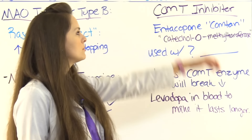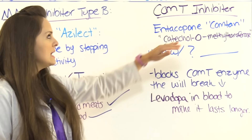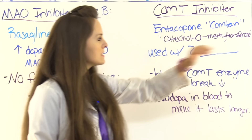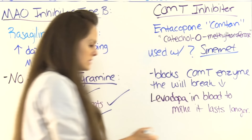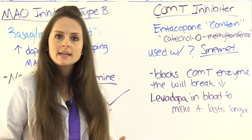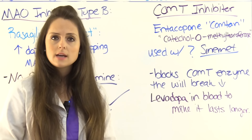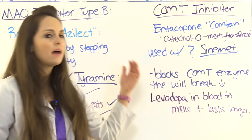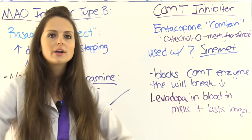Last but not least are COMT inhibitors — a popular one is entacapone, also known as Comtan. COMT stands for catechol-O-methyltransferase inhibitor. This is used with carbidopa/levodopa (Sinemet) to decrease the wearing-off phase that can happen with long-term use, when signs and symptoms become more pronounced before the next dose. It works by blocking the COMT enzyme that would break down levodopa in the blood, which makes it last longer. That wraps up this NCLEX review over Parkinson's disease — don't forget to take the free quiz and subscribe to our channel for more videos.